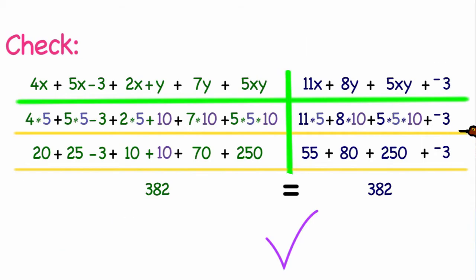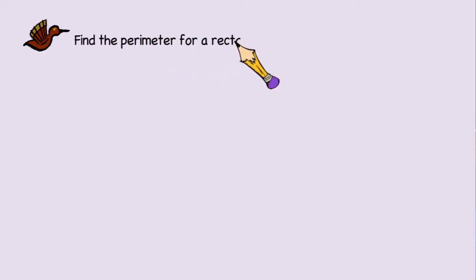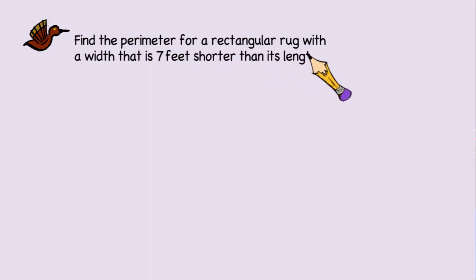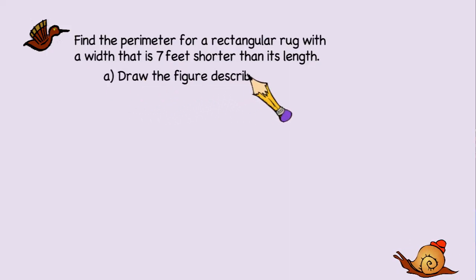Now why don't you try a problem on your own? Let's find the perimeter of a rectangular rug with a width that is seven feet shorter than its length. To help you solve this, let's go through the following steps. First, draw the figures described above. Then go ahead and use x for the length. You can use any variable you want, but I think the explanation will be easier if we all use the same variable.